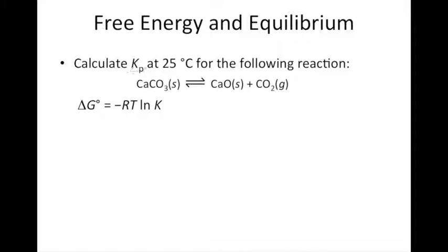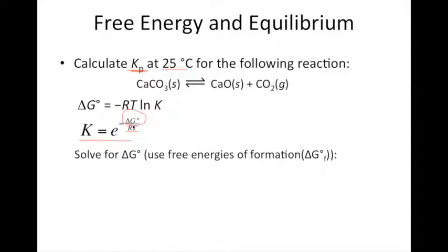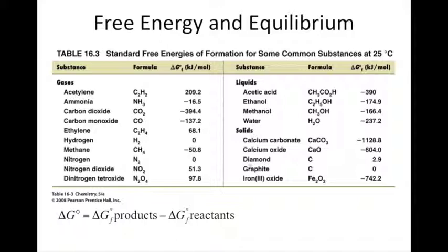We're asked to solve for Kp, so we know this reaction must be at equilibrium. We use the rearranged equation K equals e raised to negative ΔG standard divided by RT. R is a constant, and we just convert our temperature to Kelvin. So really, we just need to solve for ΔG standard using the free energies of formation method — that's where the appendix in your textbook comes in.